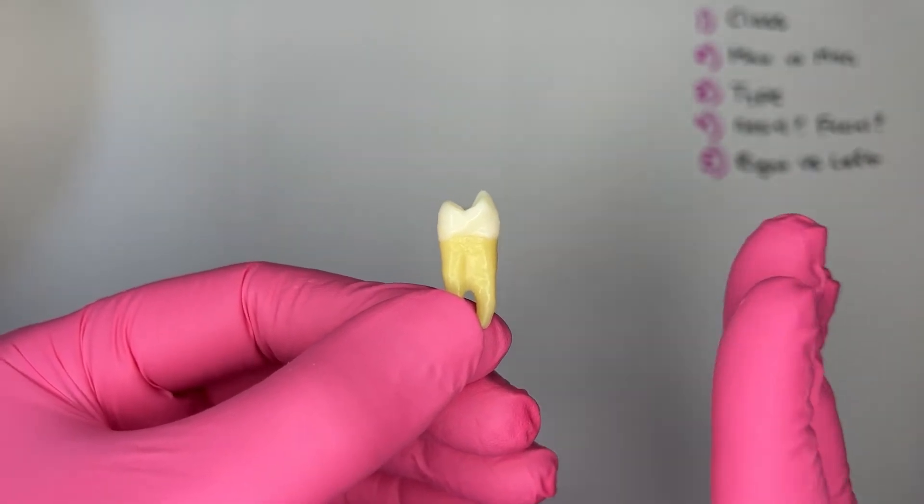Step number two, is it a maxillary or mandibular premolar? Well, I look at this tooth from the proximal. There is no tilt to the crown. These cusps and the crown are in line with the root, straight on. So this is a maxillary premolar.